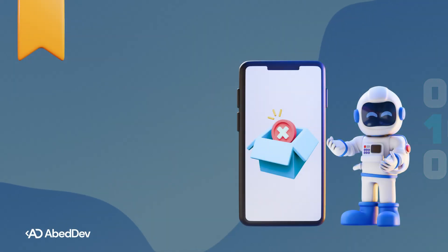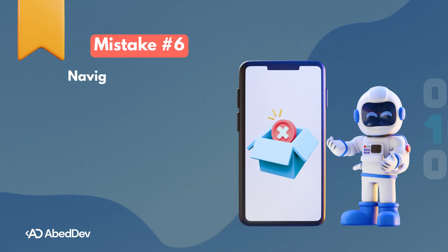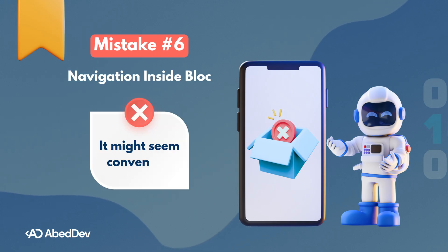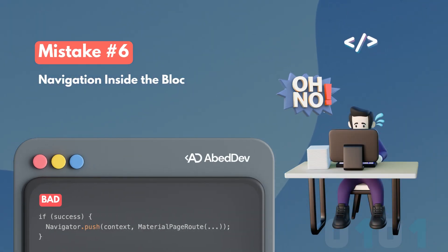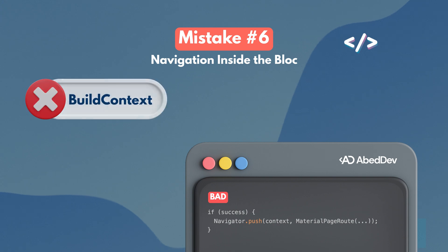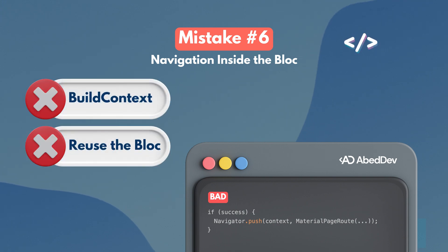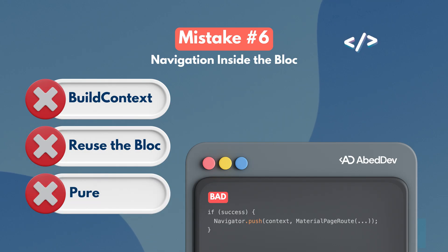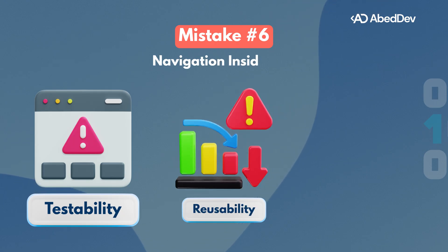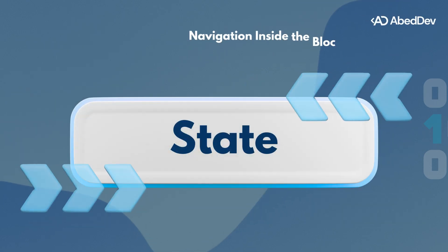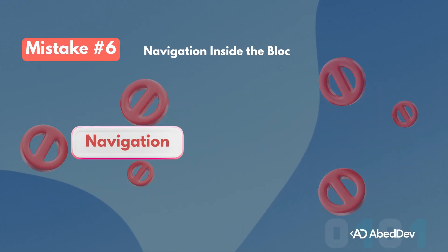Mistake number six is about crossing the wrong boundary: calling Navigator inside your bloc. You finish a login request and call navigator.push from the bloc or repository, but your bloc is now tightly coupled to Flutter's UI layer. It now needs a BuildContext, you can't reuse it in non-Flutter environments like tests or CLI tools, and your business logic has side effects tied to UI behavior. This breaks testability, reusability, and separation of concerns.